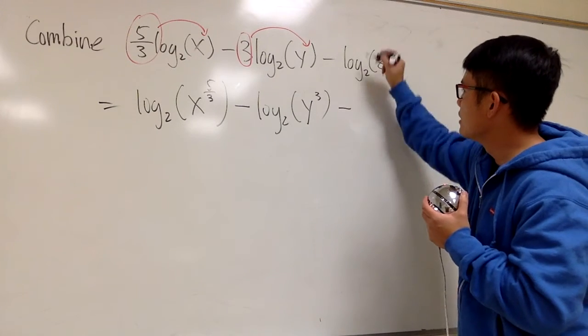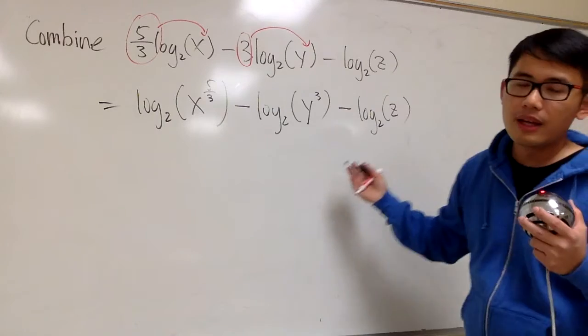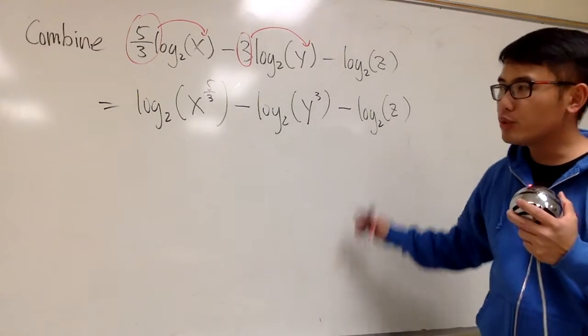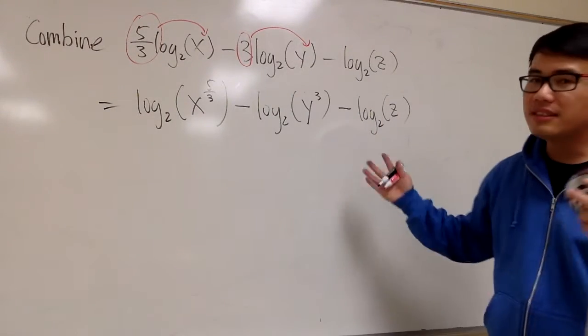And then we minus log base 2 of z. As you can see, all these 3 logs have the same base. So we will be able to combine them all together into just one single log. And this is how we should do it.